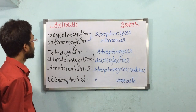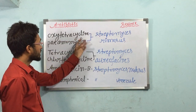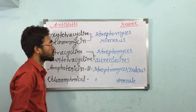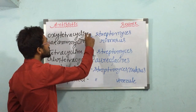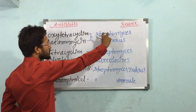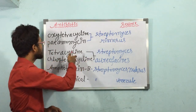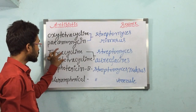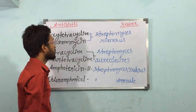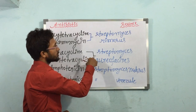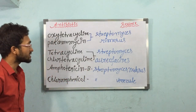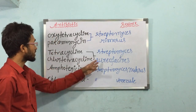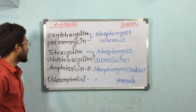The first antibiotics are Oxytetracycline. Next are Tetracyclins and Chlortetracycline. These antibiotics come from the microorganism Streptomyces aureofaciens. So from this one microorganism we can get these two antibiotics.